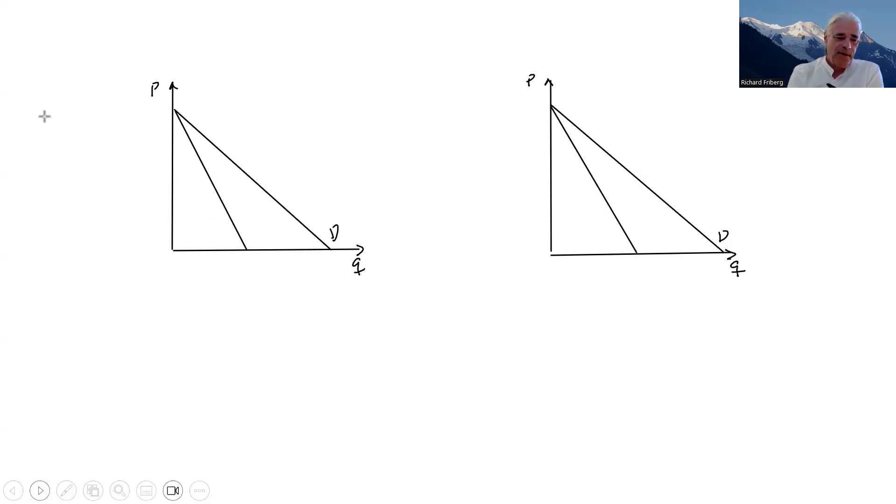And as usual, at this stage, they have a downward sloping marginal revenue curve. So now let's get to the heterogeneity.